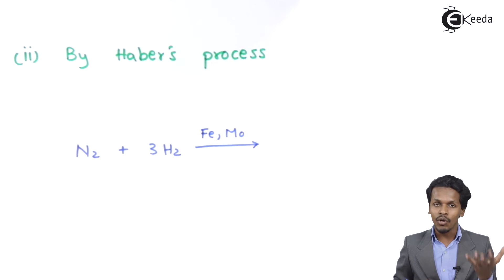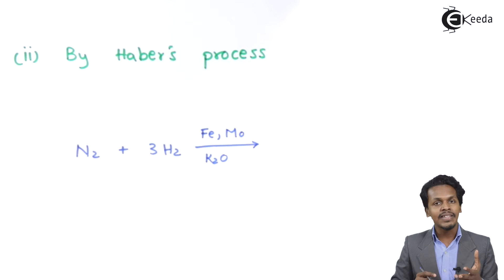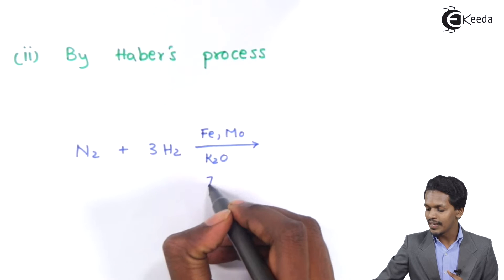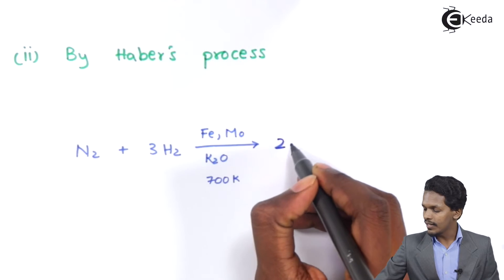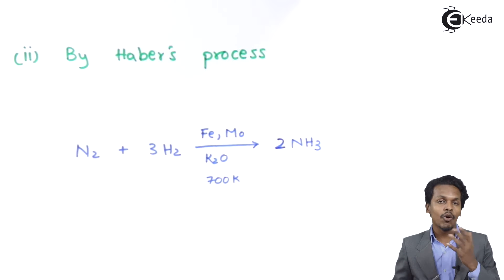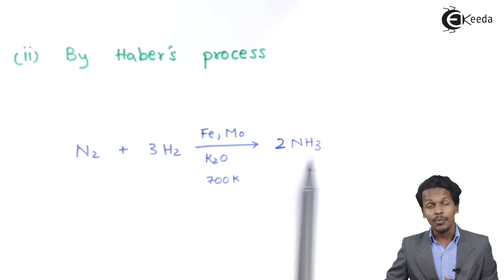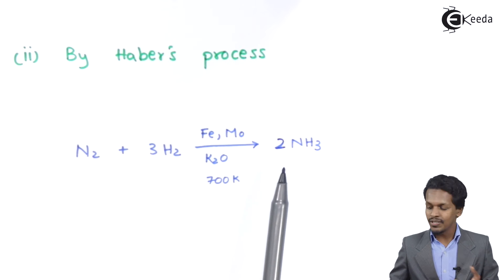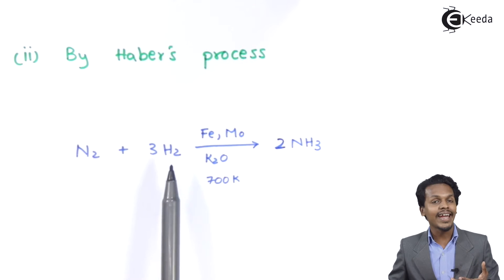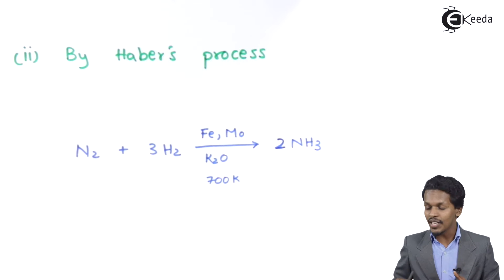The promoters used can be molybdenum or K2O. The reaction occurs at an optimum temperature of 700 Kelvin, and at high pressure, we obtain ammonia, NH3. However, this ammonia can further decompose back into N2 and 3 moles of H2, which is why this reaction is reversible. To obtain ammonia in a precise and high quantity, we need to carefully control these conditions.